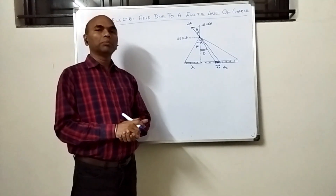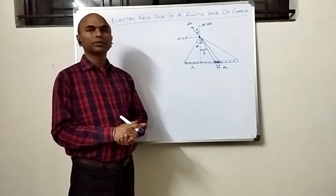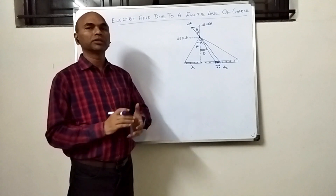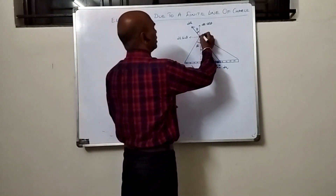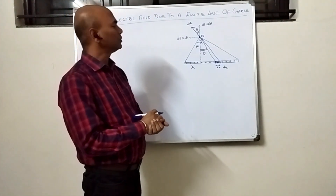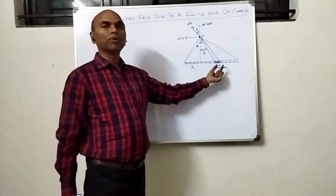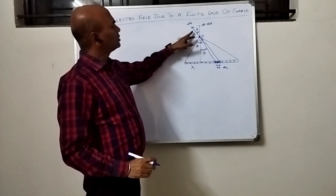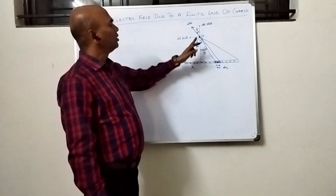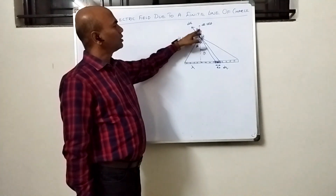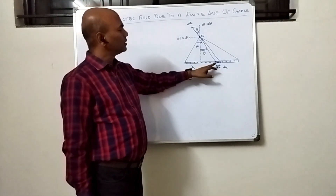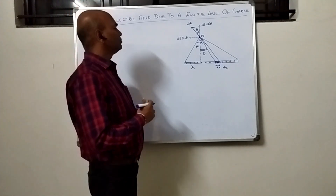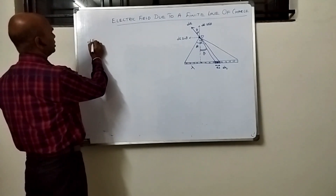We discuss the electric field due to a finite line of charge uniformly distributed with a positive charge, where lambda is the linear charge density. We need to find the electric field at point O. To do this, we consider a small element of size DX. The electric field DE due to this element can be resolved into two components: a cosine component and a sine component, assuming the line joining this element subtends an angle theta with the vertical.